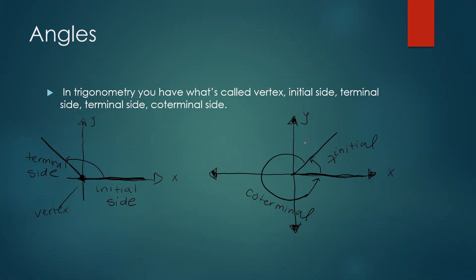Now let's talk about initial and coterminal. Looking at the second image, this arrow represents the angle. This is called the initial side — for example, 30 degrees is your initial angle. Your coterminal side is the rest of the side, so the coterminal is much larger than the initial. If the initial is 30 degrees, the coterminal would be 360 minus 30, which is 330 degrees.